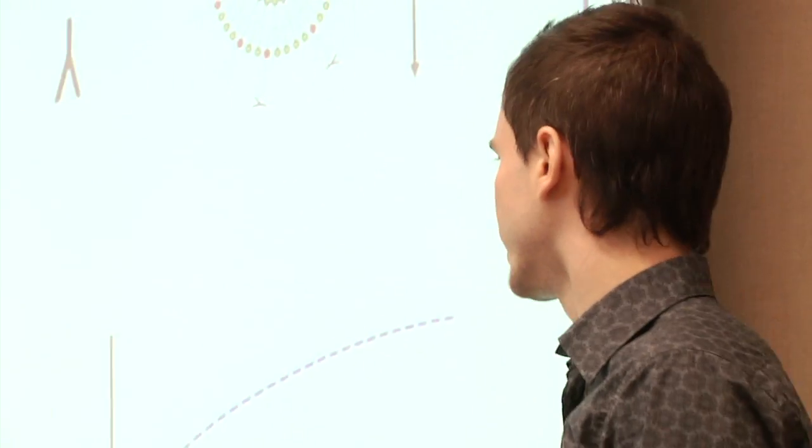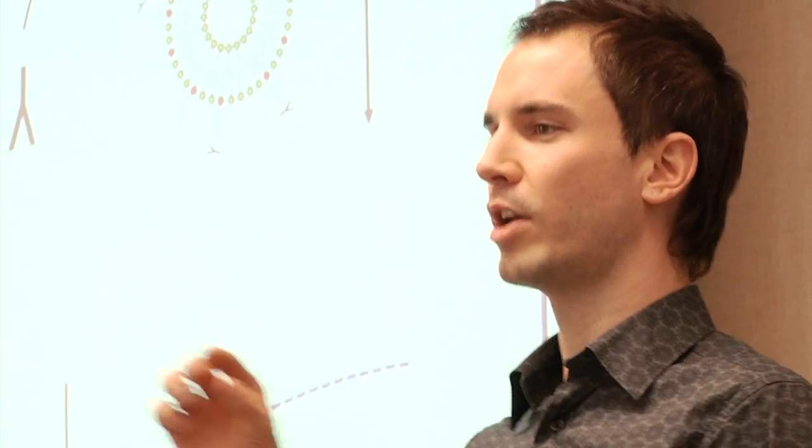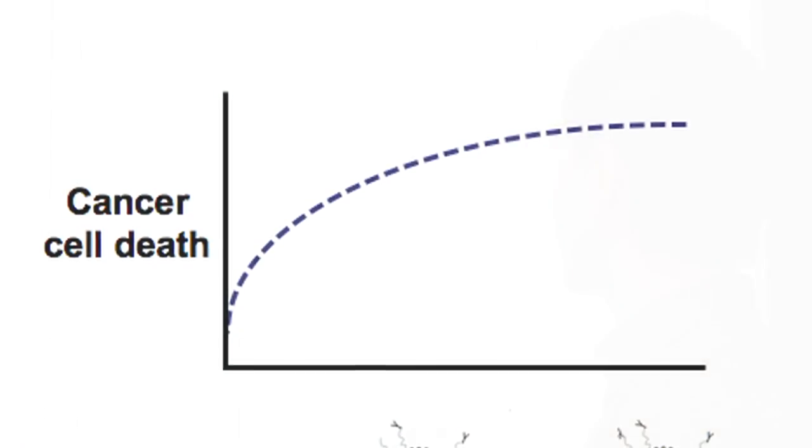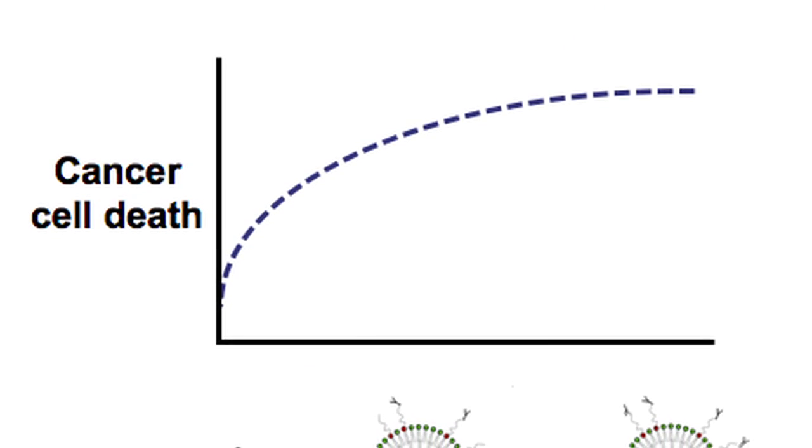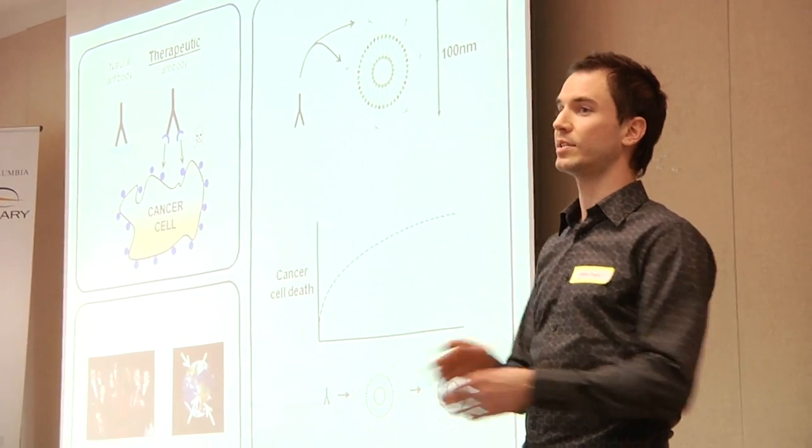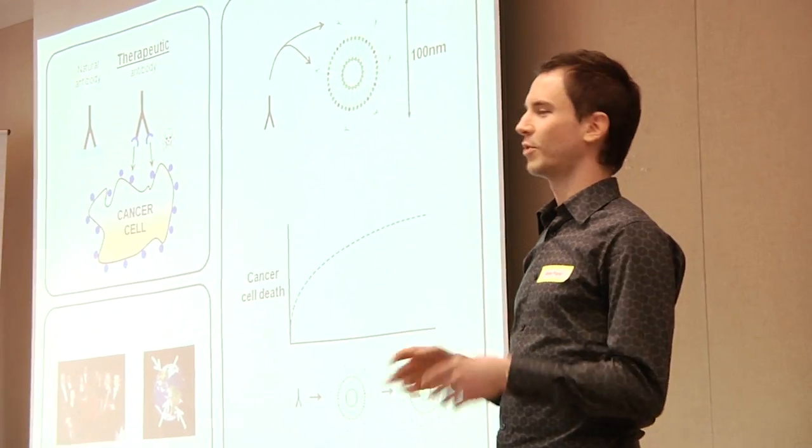Really interestingly, what I've found is that as the number of antibody molecules in the nanopharmaceutical increases, the amount of cancer cell death also increases. But that's actually a little bit counterintuitive because I'm giving the same amount of antibody to all the cells, so we should see the same amount of cell death. So why is this happening?